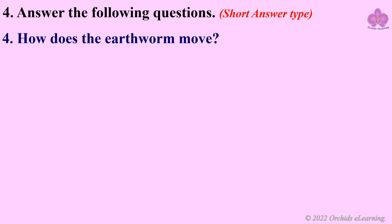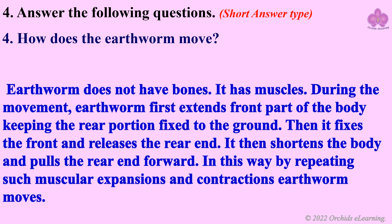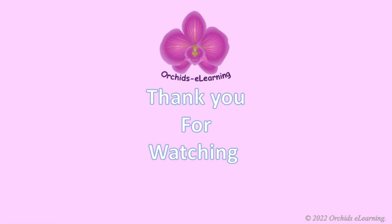How does the earthworm move? Earthworm does not have bones — it has muscles. During movement, the earthworm first extends the front part of the body keeping the rear portion fixed to the ground. Then it fixes the front and releases the rear end. It then shortens the body and pulls the rear end forward. By repeating such muscular expansions and contractions, the earthworm moves.